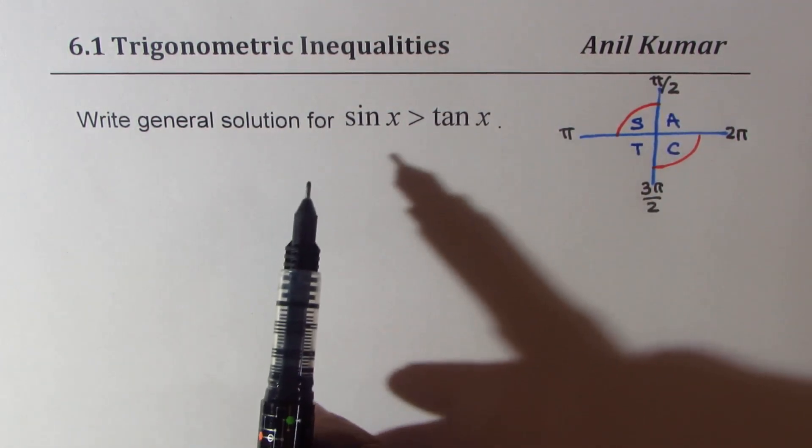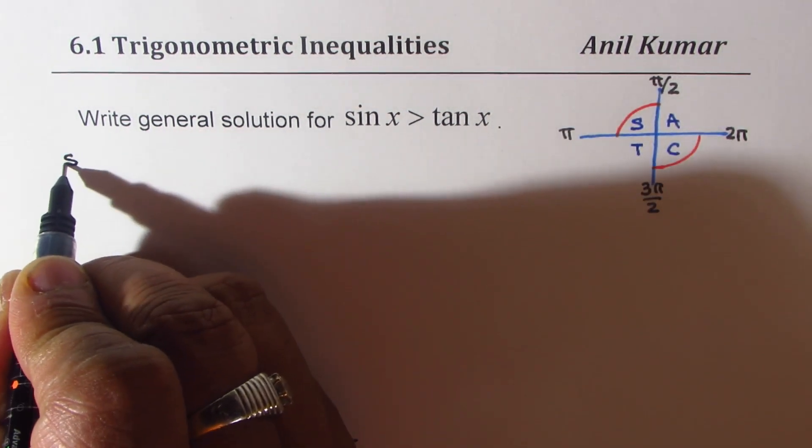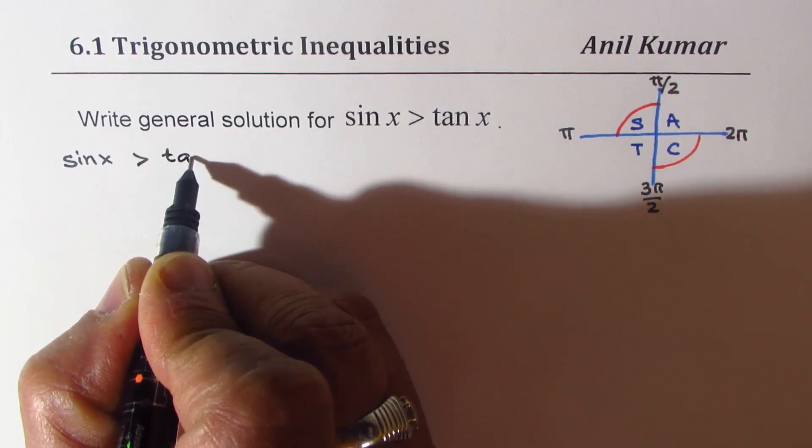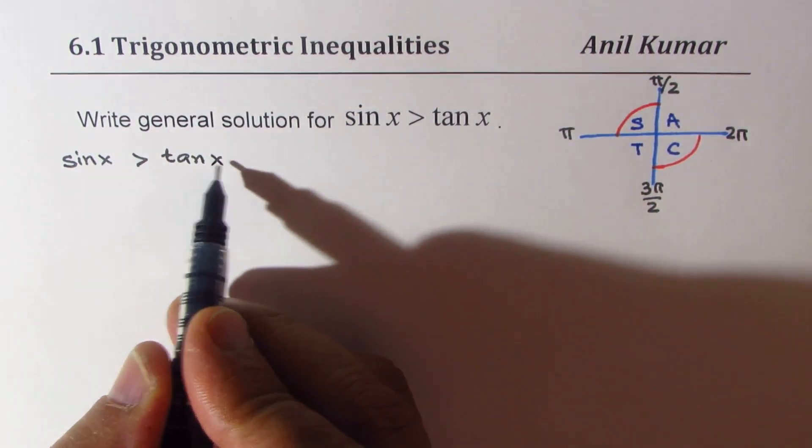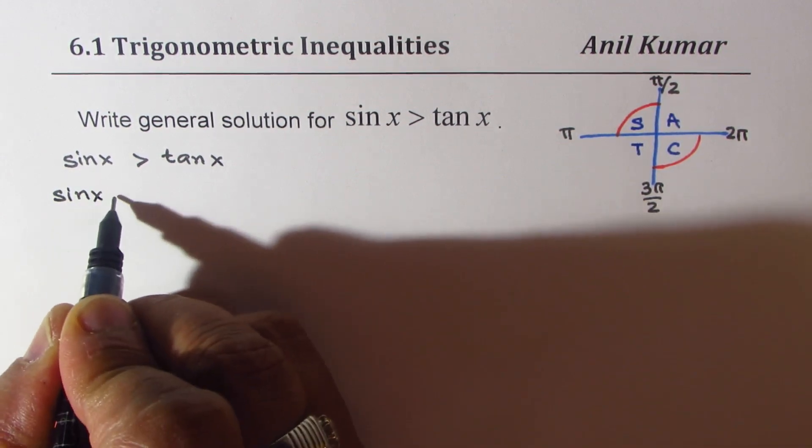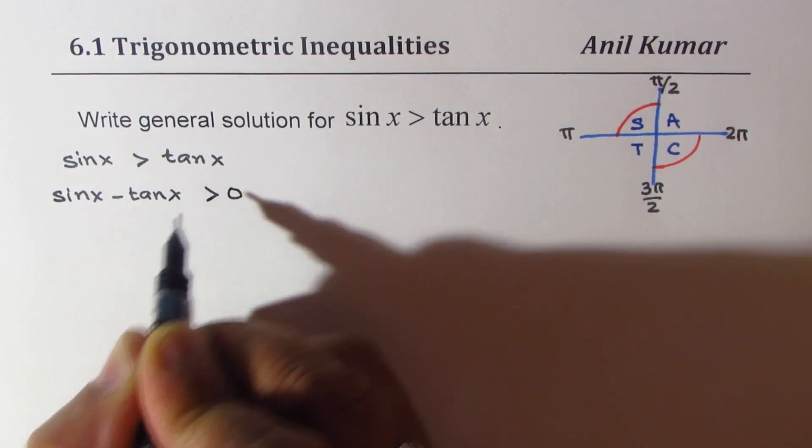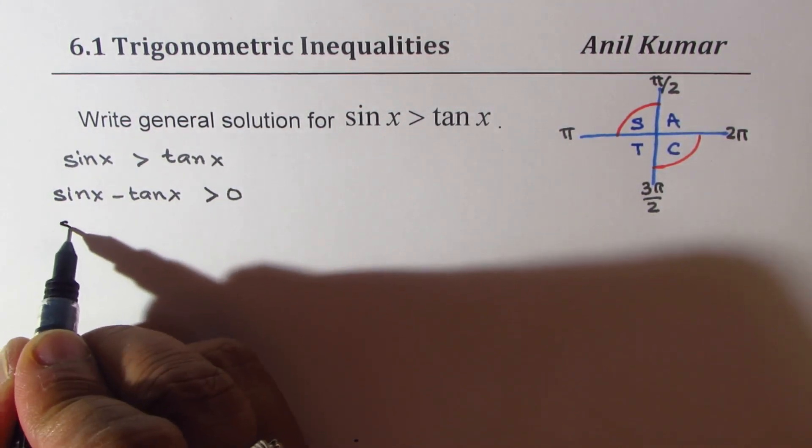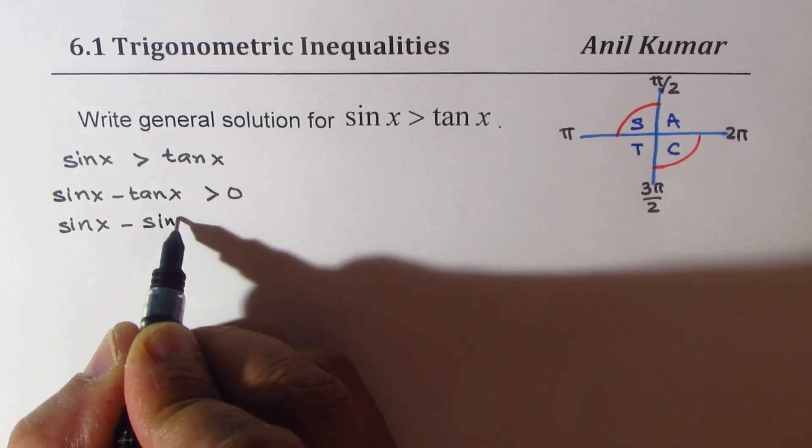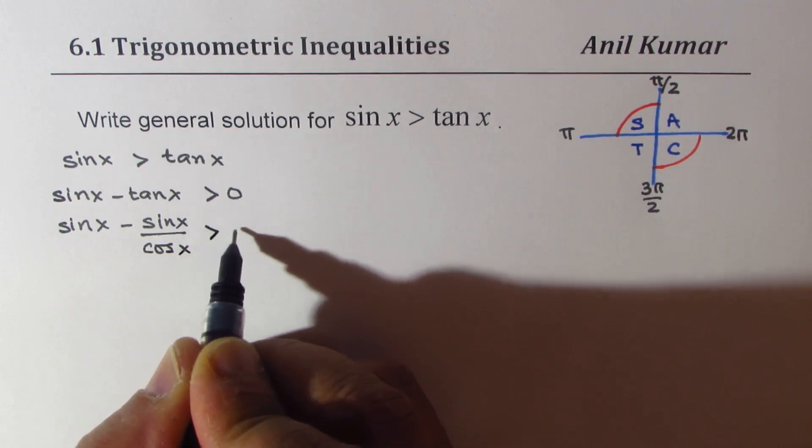But now, let me provide you with algebraic solution. We have sine x greater than tan x. Bringing tan to the left side, we could write this as sine x minus tan x is greater than 0. Tan can be written as sine over cos. Sin x minus sin x over cos x is greater than 0.